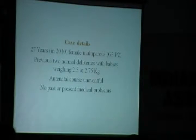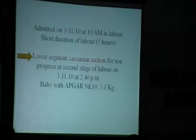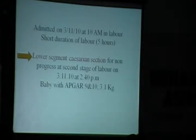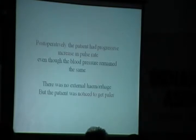We had a 27-year-old multiparous lady. She had two normal deliveries — 2.5 kg and 2.75 kg — and she was otherwise perfectly healthy with no medical problems. She was admitted on the 3rd of November at 10 a.m. She had a short labour of 5 hours, and at 2:40 p.m. she had already reached full dilatation for one hour. As there was no evidence the head was descending, she was taken for a cesarean section. The baby came out crying — Apgar 9/10, 3.1 kg.